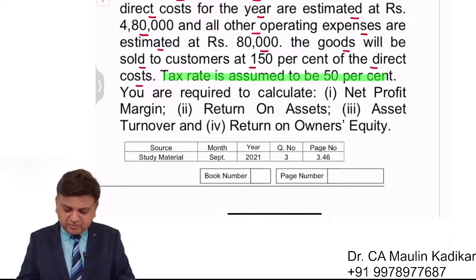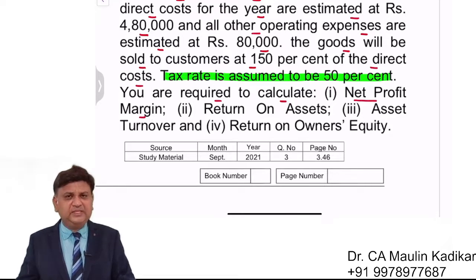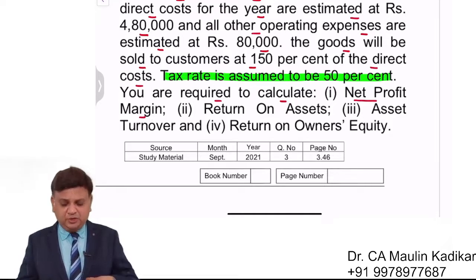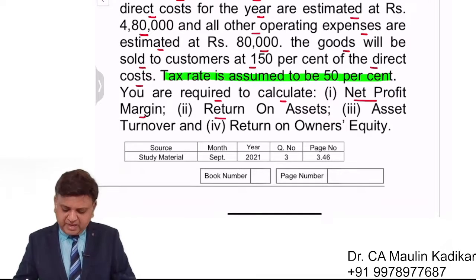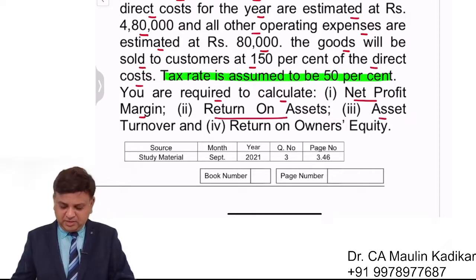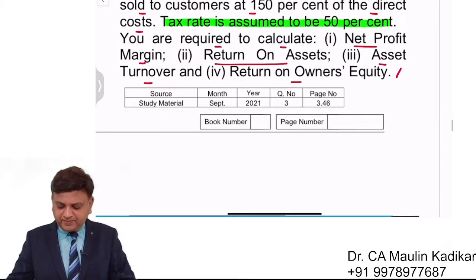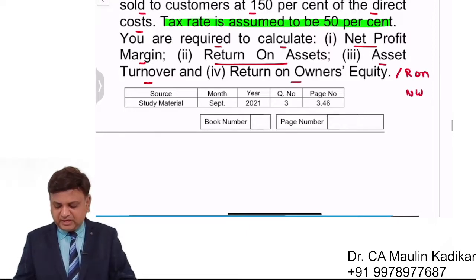Tax rate is assumed to be 50%. You are required to calculate: net profit margin (net profit ratio), ROA (return on asset), asset turnover ratio, and return on owner's equity, which is also called return on net worth. These are one and the same.